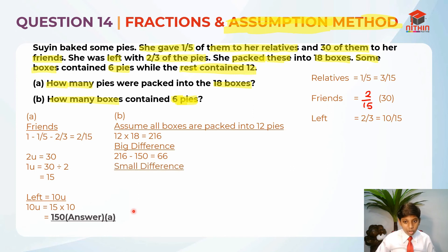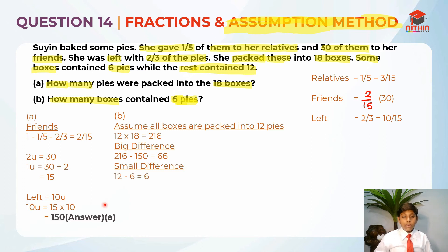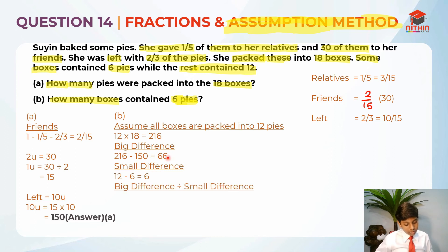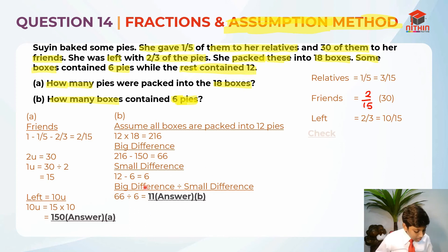Now we find the small difference, which is always between the two box sizes — 12 minus 6 equals 6. The last step is to take the big difference divided by the small difference: 66 divided by 6, which gives us 11. So 11 is the answer for part B — there are 11 boxes containing 6 pies.